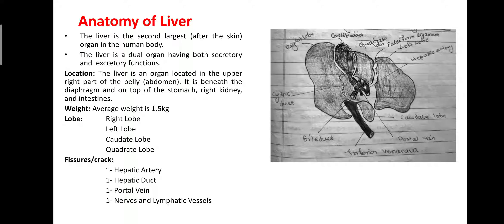Dear students, the liver is the second largest organ of the body after the skin. The liver is a dual organ having both secretory and excretory functions. The liver is located in the upper right part of the abdomen, beneath the diaphragm and on top of the stomach, right kidney, and intestines. The average weight of the liver is 1.5 kg.